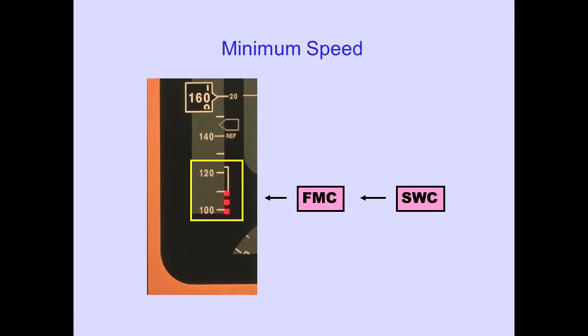The margin may be manually selected between 1.2 or 1.3 G's. Minimum speed is displayed as red boxes. This indicates the airspeed at which stick shaker or low speed buffet occurs. Minimum speed in this example is 111 knots. The stall warning computer through the selected flight management computer provides this information.